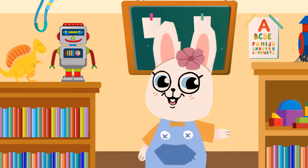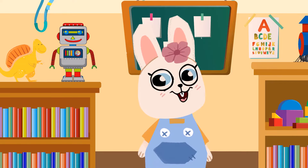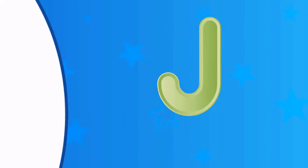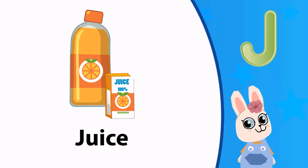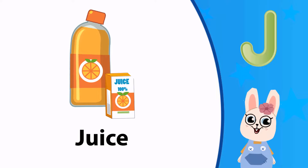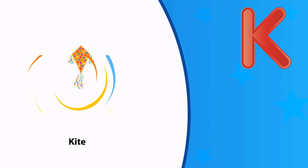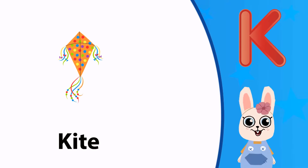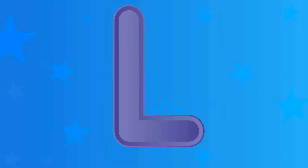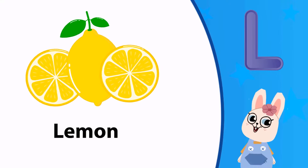Wonderful! Let's continue! J. J is for juice. K. K is for kite. And L. L is for lemon.